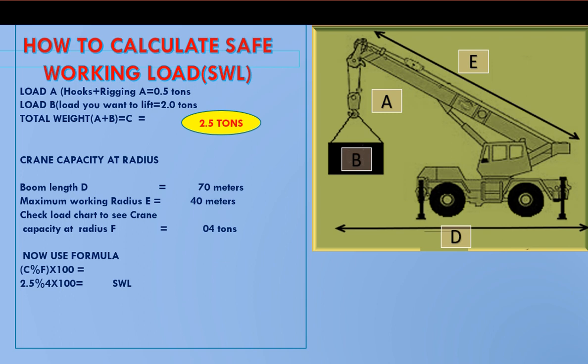We use this formula: C divided by F multiplied by 100 equals safe working load limit. Our actual load C is 2.5 tons. We divide it by 4 tons from the load chart: 2.5 divided by 4, multiplied by 100, equals 62.5%.